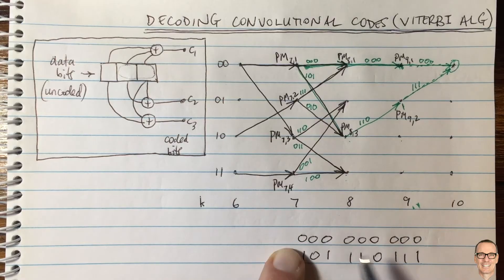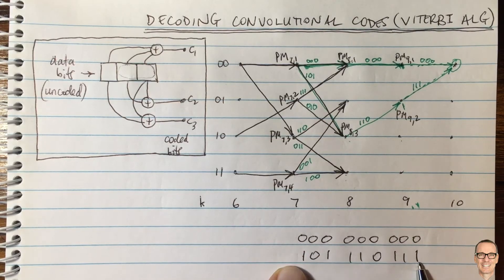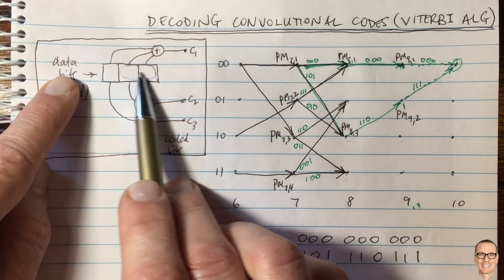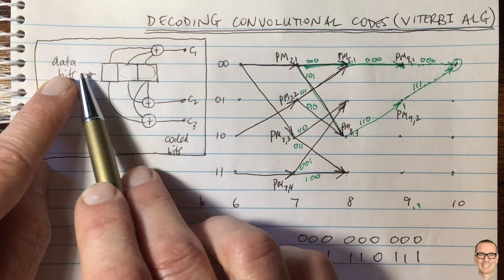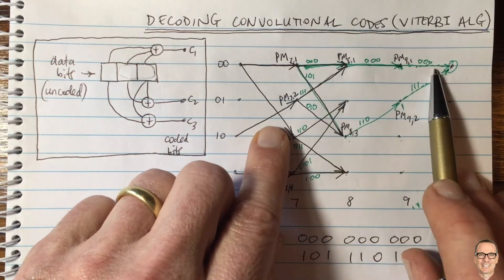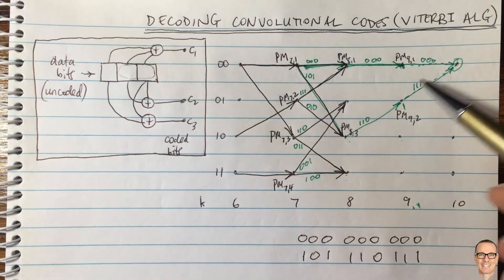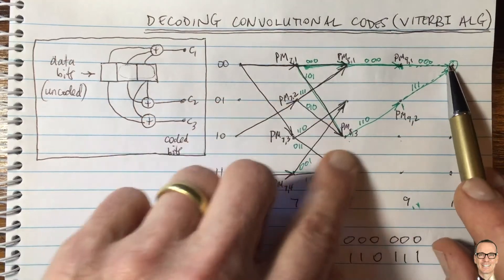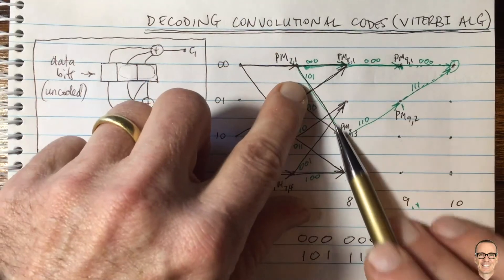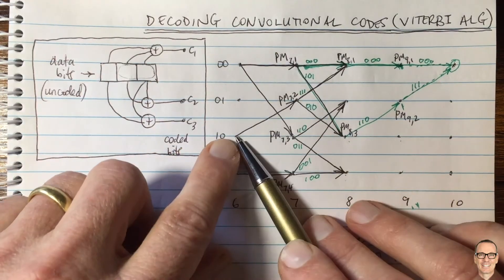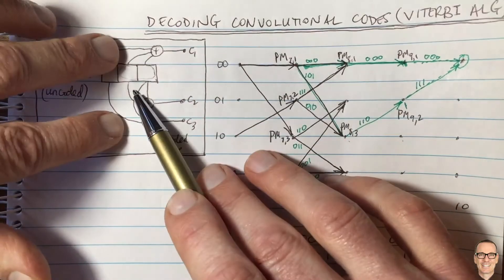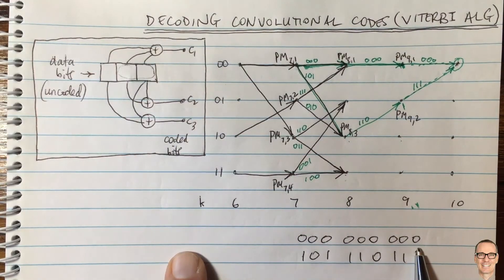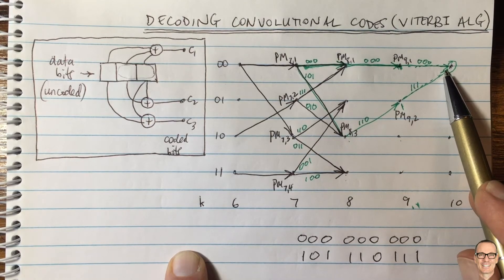This is the advantage of the convolutional code — it spreads data out over multiple time slots. In other examples where paths diverge further back, the sequences being compared would be even longer, making a decoding error even less likely in the Viterbi algorithm.